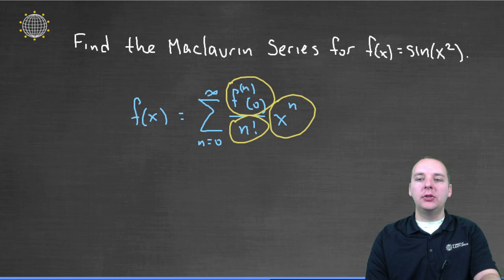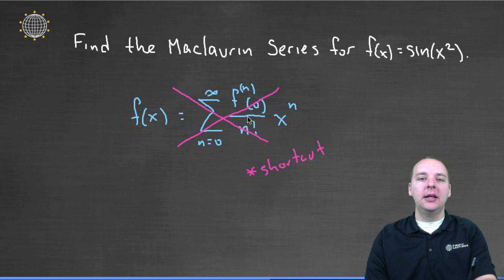However, I think we've got a shortcut here, because if you notice, sin(x²) looks a lot like sin(x). And so if we can start with the known Maclaurin series for sin(x), maybe there's something we can do to manipulate the Maclaurin series for sin(x) to give us the Maclaurin series for sin(x²).